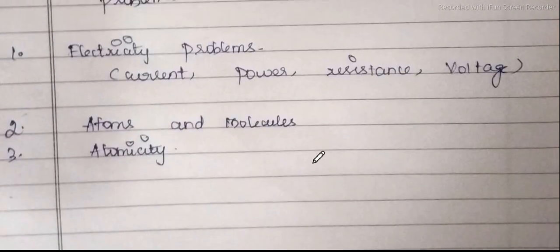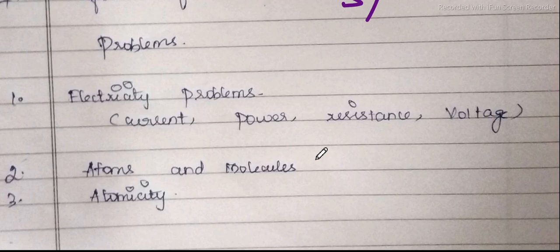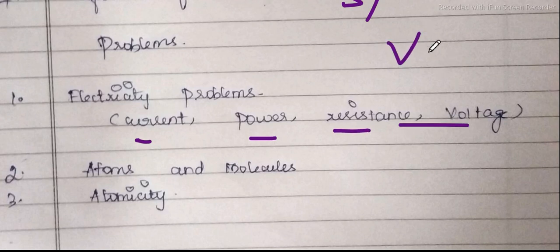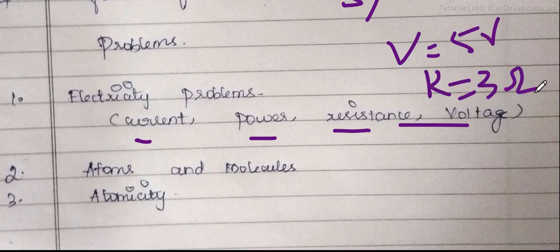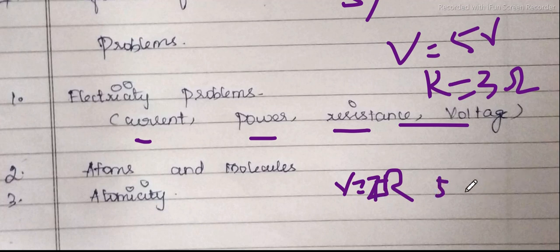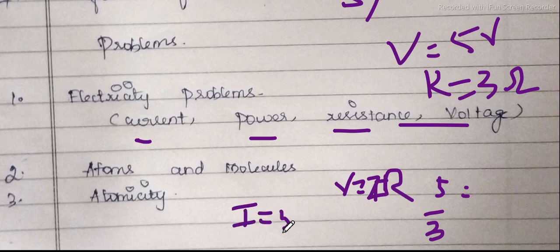Regarding problems, the main focus on the problem area is electricity problems: current, power, resistance, voltage. For example, voltage value is 5 volts, resistance value is 3 ohms — how to find the current? We use V is equal to IR. V equals 5, R equals 3, so I equals 5 divided by 3. We choose into Ohms. Practice these types of problems.